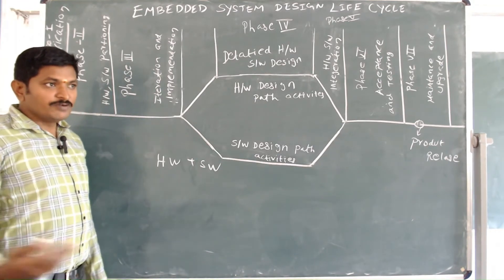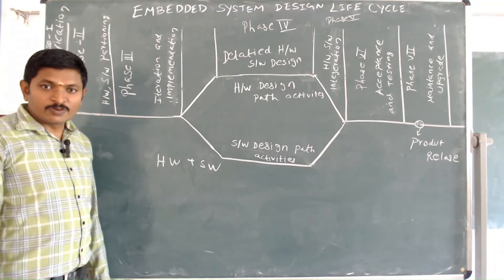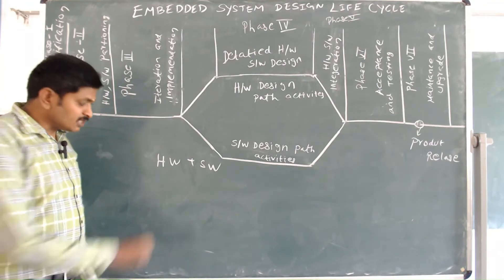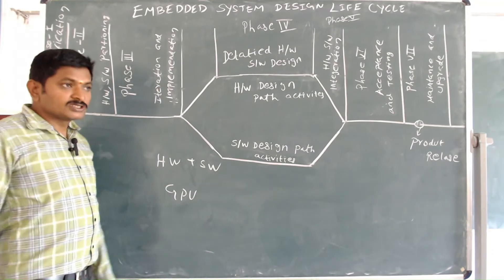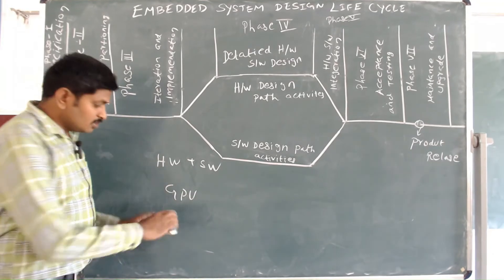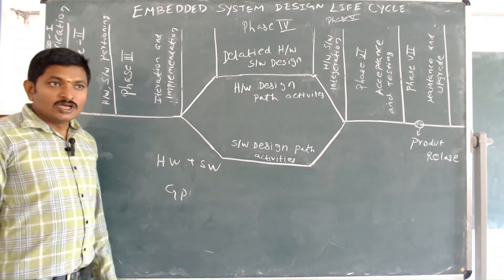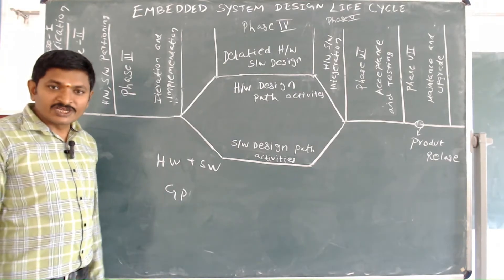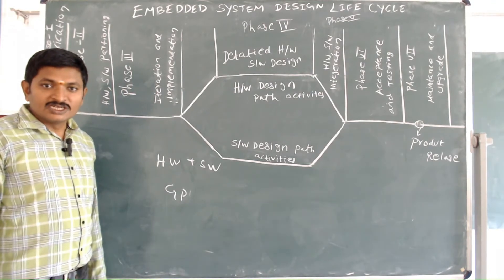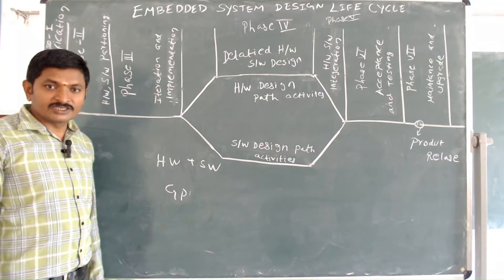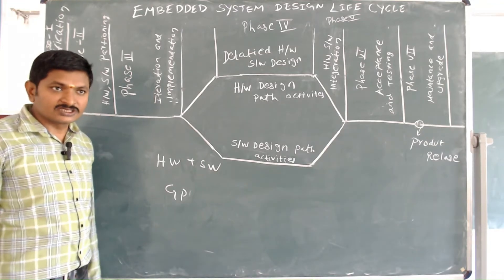First of all, how it differs from an Embedded System with a microprocessor: a microprocessor is a general purpose processor which is used for a wide range of applications, but an Embedded System is specially designed for a specific task. It is designed for dedicated applications.